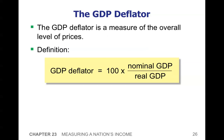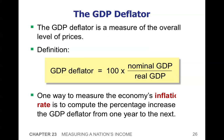To calculate the GDP deflator, we first need to calculate the nominal GDP, then the real GDP, and then get the GDP deflator. One way of measuring the economy's inflation rate is to compute the percentage increase in the GDP deflator from one year to the next.